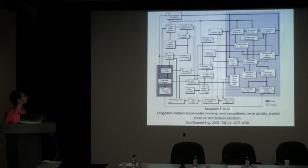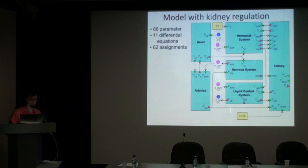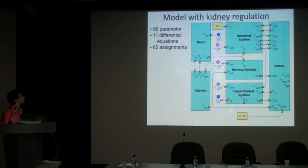Here is the original scheme from the paper by CRS-1 and colleagues. As you can see, the model is already represented as interconnected sub-models. On the basis of this scheme, we created our version, which comprises six main modules: heart, hormonal system, nervous system, liquid control system, and others. The model is described with 86 parameters and 62 assignments.